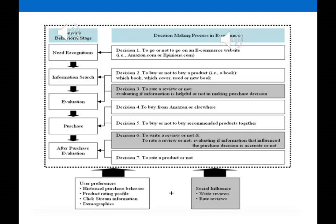The first phase occurs when a consumer faces an imbalance between an actual and desired state of need. For example, I want to eat, I want to buy a new mobile because mine is malfunctioning, or I need new summer clothes. This is the role of marketing — to make the consumer recognize such an imbalance and convince them that a product or service will fulfill that gap. Once I feel this imbalance, I will search for information.